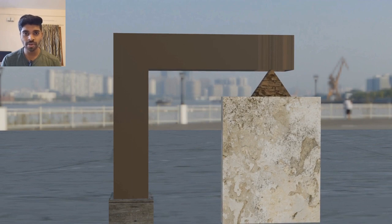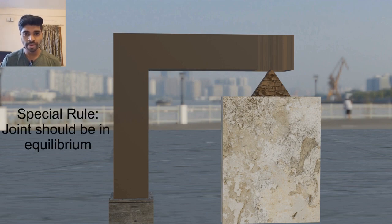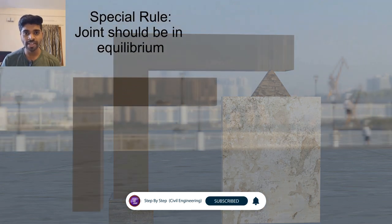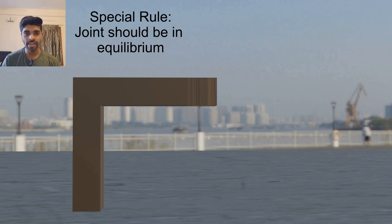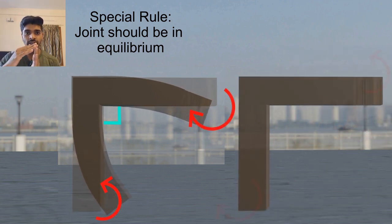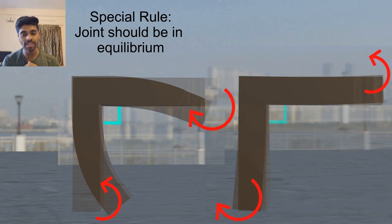To make the accurate deflected shape, we have one special rule: the joint has to be in equilibrium state. The rule is simple — at one portion an anti-clockwise moment will come and at the other portion a clockwise moment will come, so they counterbalance each other and the joint remains in equilibrium. Applying this concept, the 90-degree angle is maintained, and either both members will be inward or both members will be outward.